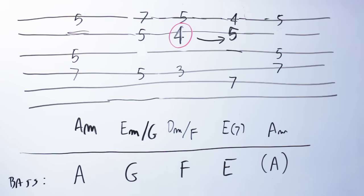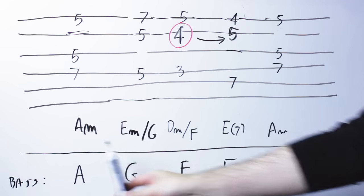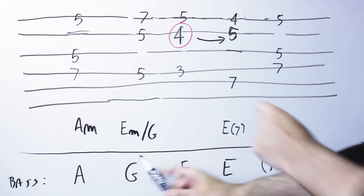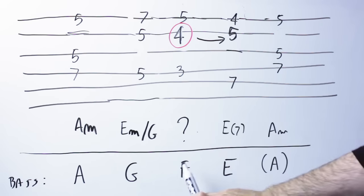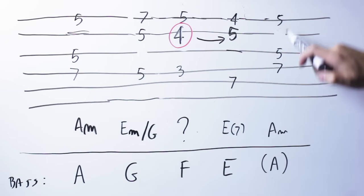So now the whole thing sounds this way. The A minor, the E minor in first inversion, this new chord, the E major, and the A minor again.